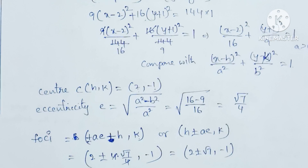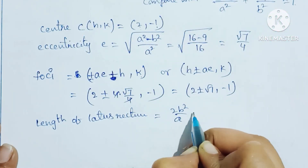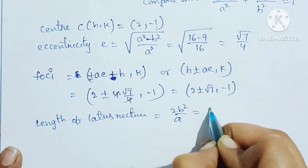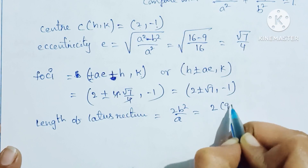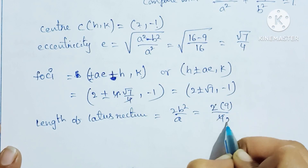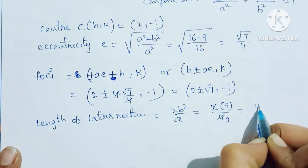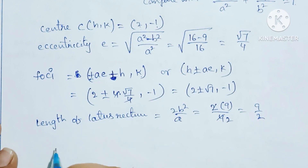Length of latus rectum = 2b²/a = 2 × 9 / 4 = 9/2.